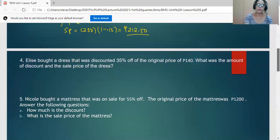For number four, Elise bought a dress that was discounted 35% off the original price of 140 pesos. Again, this is the list price, this is the discount rate. What was the amount of discount and the sale price? This is the selling price.